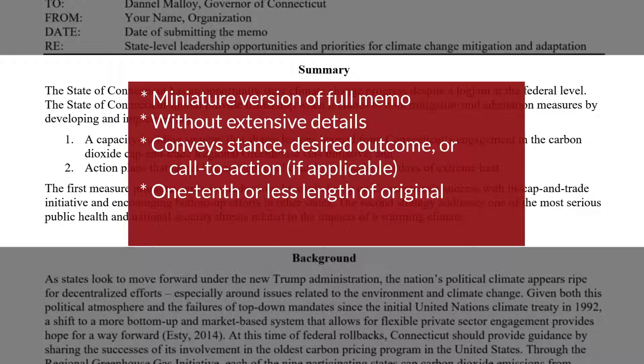A summary should be one-tenth or less than the length of the original. In this case, the memo is 1,119 words. The summary of it is 119 words — exactly one-tenth. Sometimes the summary is written last, although it appears at the top of the memo, and that is because it is the elevator pitch developed after much reflective thinking and research.